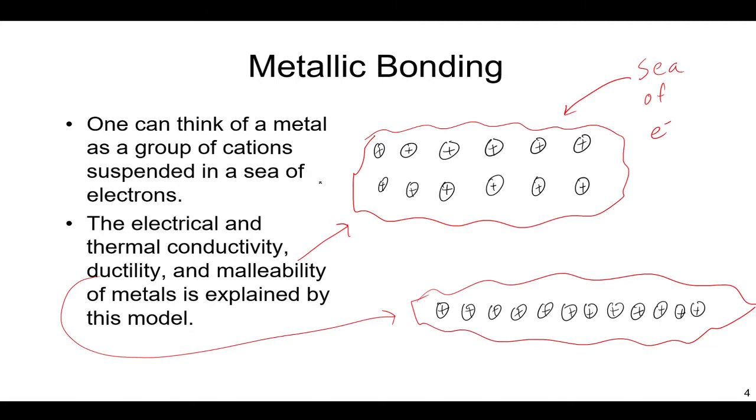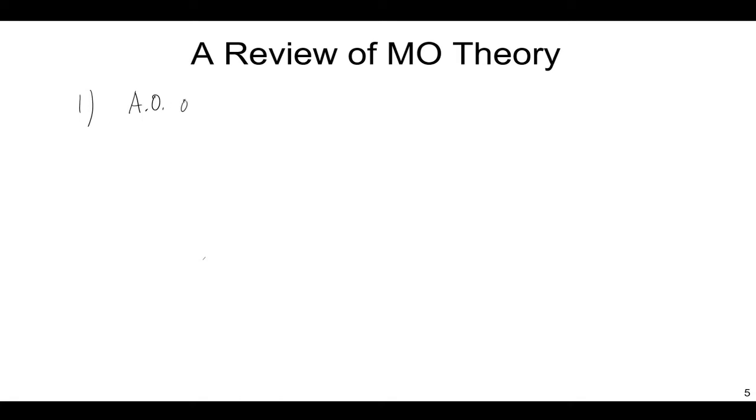To understand electrical and thermal conductivity, we need a review of molecular orbital theory. Atomic orbitals (AOs) overlap and combine to make molecular orbitals (MOs).